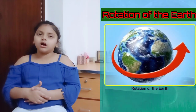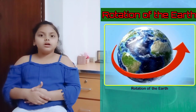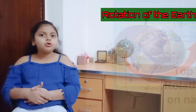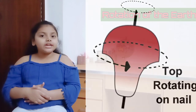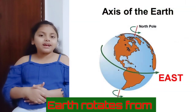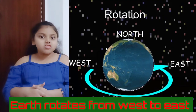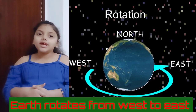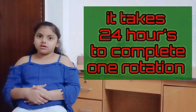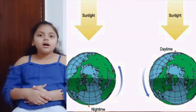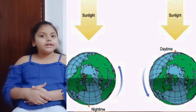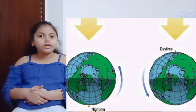The earth rotates like a top on its own axis from the west to the east in about 24 hours. Day and night occur on the earth due to the rotation of the earth.